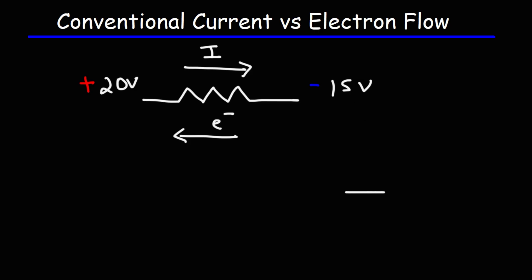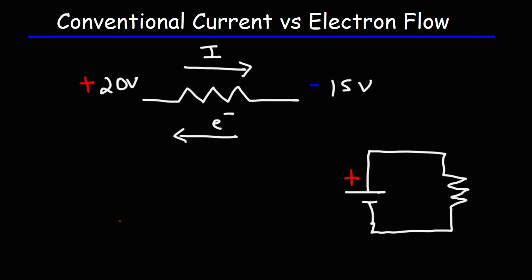So let's say if we have a circuit — a battery attached to a resistor. This is the positive terminal of the battery, and this is the negative terminal of the battery. Conventional current will flow in this direction, from positive to negative. But in reality, what's actually happening in these wires is electrons are flowing in the opposite direction, from negative to positive.